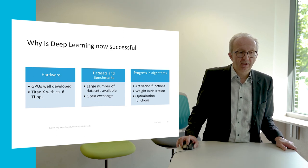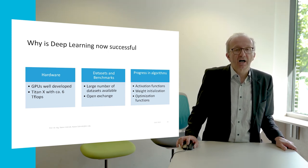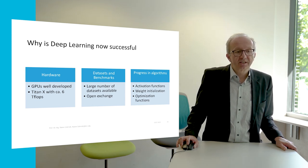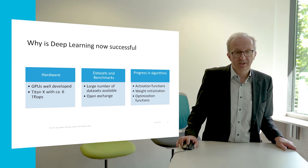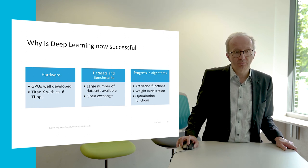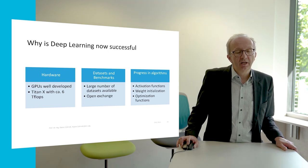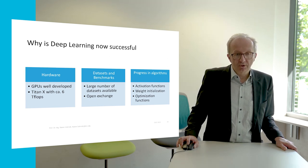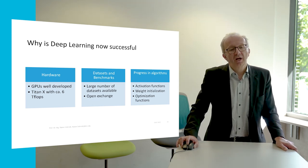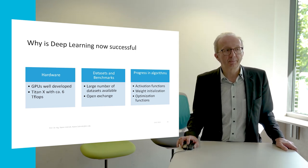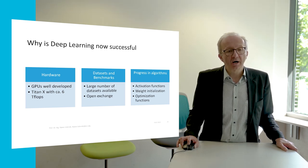So why is deep learning now successful? Why has it become such a hot topic today? First there is the development of hardware. Graphical processing units are well developed — for example, a Titan X has approximately six teraflops, which is far beyond the capacities of a supercomputing center of the 1990s. Then we have huge advances in the area of data sets and benchmarks. There is a large number of data sets available and they initiated the development of algorithms because there is an open exchange between researchers. The fragmented research landscape of the 1990s now works closely together.